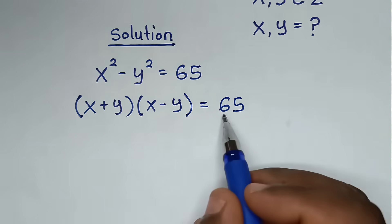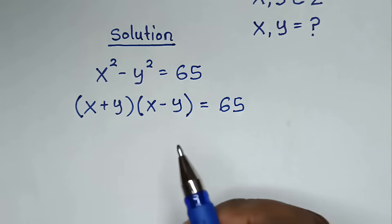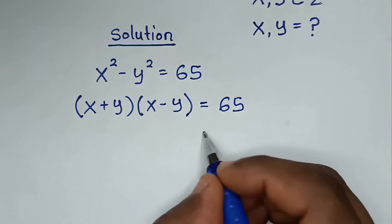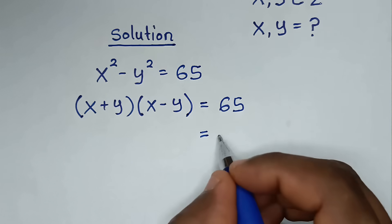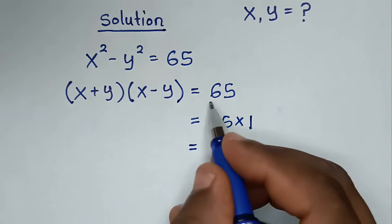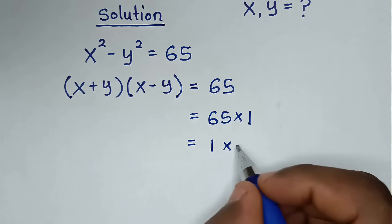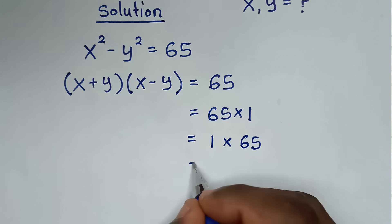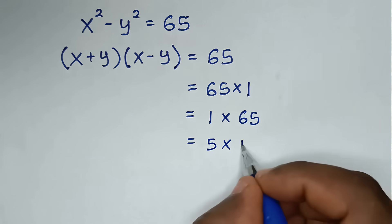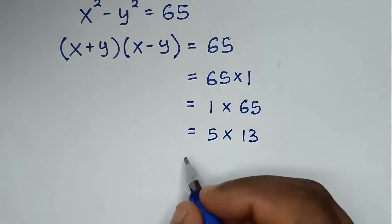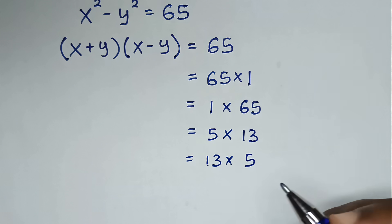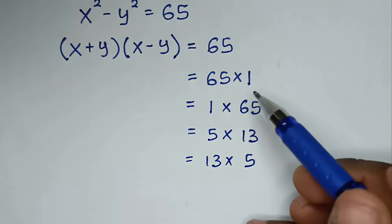To get 65 as a product of (x plus y) times (x minus y), we have these choices: 65 is the multiplication of 65 times 1, or 1 times 65, or 5 times 13, or 13 times 5.